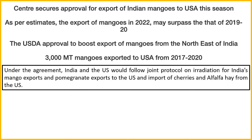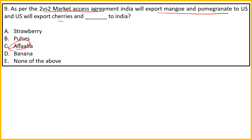A joint protocol will be set up for irradiation of mangoes being exported to kill diseases, and for cherry and Alfalfa being imported into India. The center has already received approval for mango exports to the US, and in 2022 exports are expected to exceed 2019-2020 levels. Exports will also be boosted from North East India. Between 2017 and 2020, around 3,000 metric tons of mango were exported to the US. Key point to remember: the 2 versus 2 market access agreement was signed with the US.